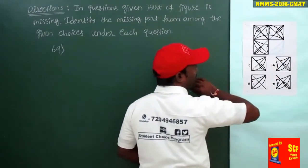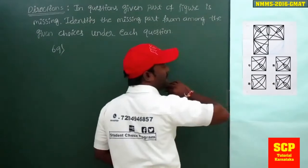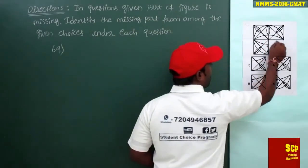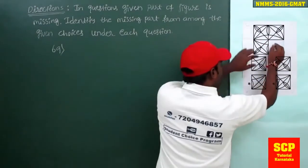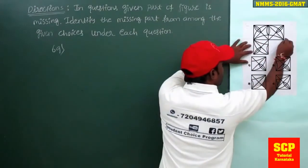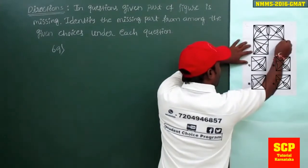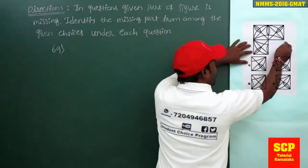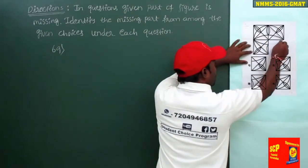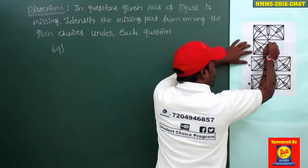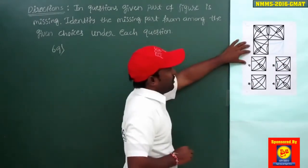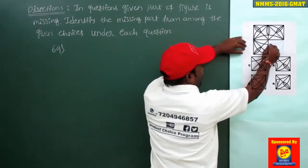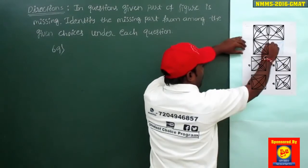Now the square box is completed. Next, there is a curve and you have to complete that curve like this. Next, there are some small curves like this — you have to complete that one as well.